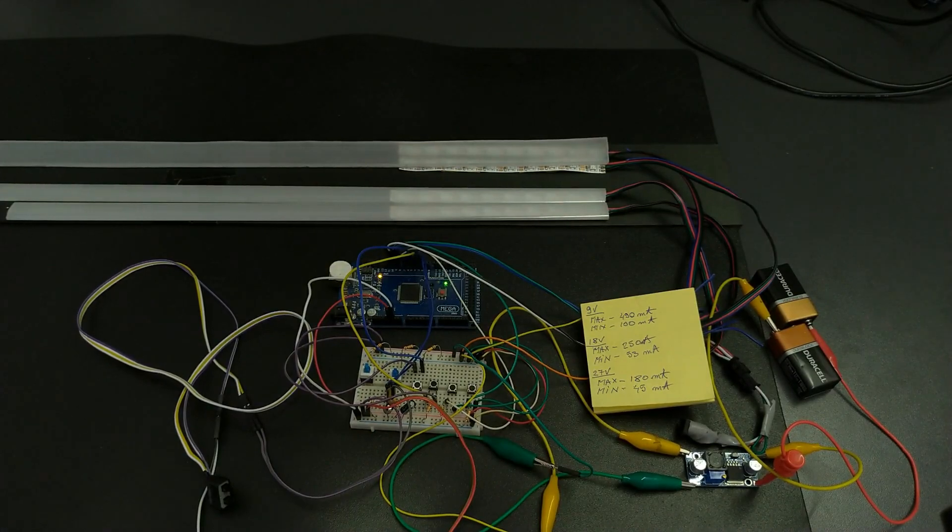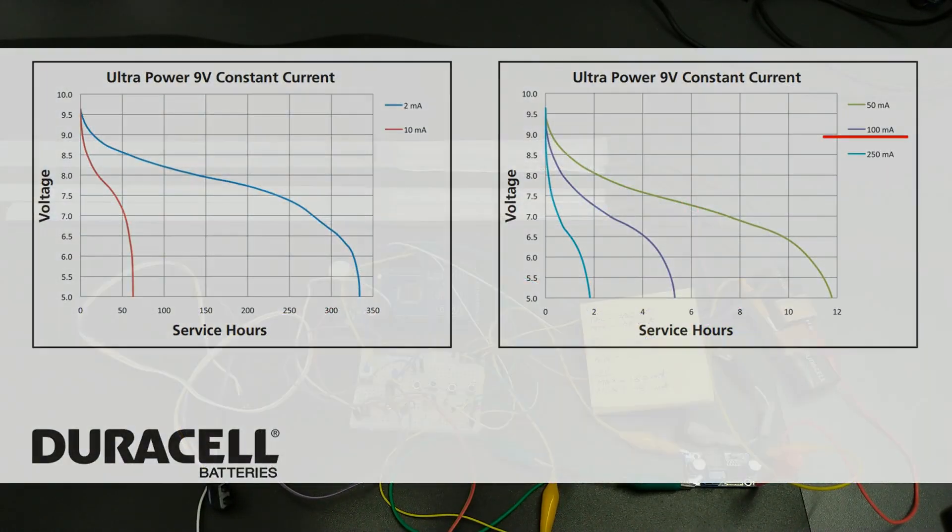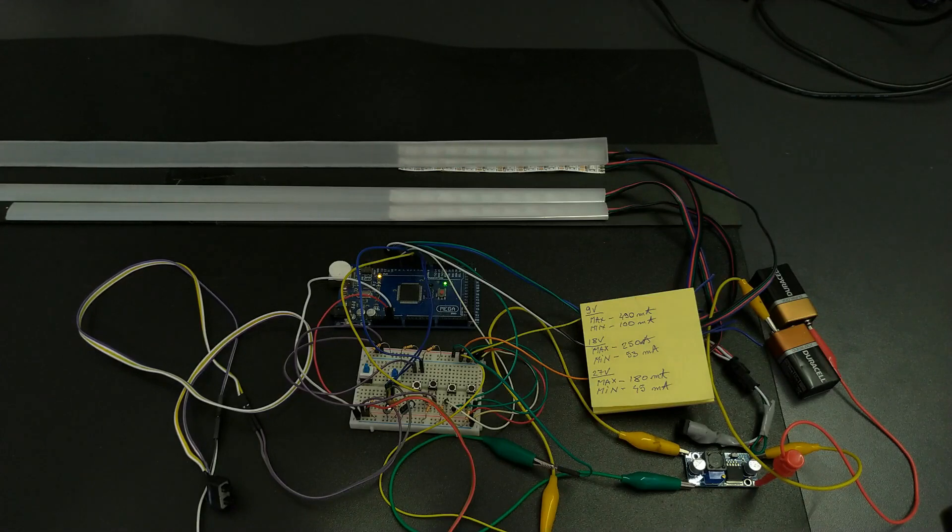So, here are the readings. By finding these values and having the battery datasheet we can make an average for the current consumption and we can estimate that for 18V input with two 9V Duracell batteries we will have an average of 12 continuous working hours. So, don't forget your lights on.